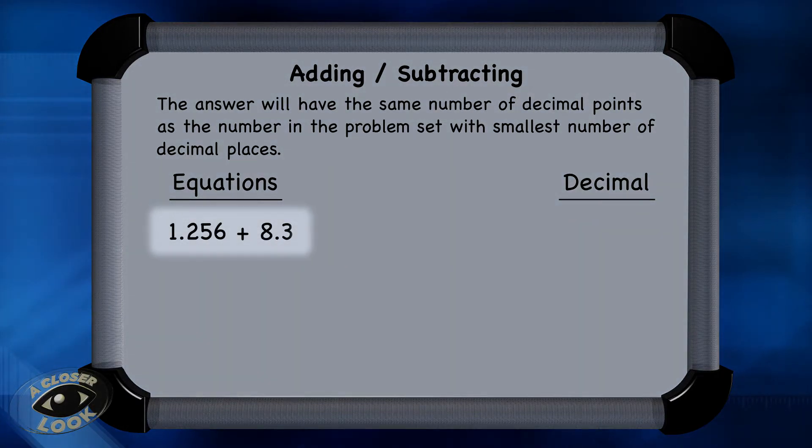Looking at 8.3, it goes to the tenths place, and 1.256 is to the thousandths place. And so the answer has to be rounded to the tenths place, because that is the smaller decimal place of the two numbers.